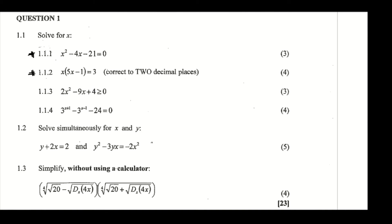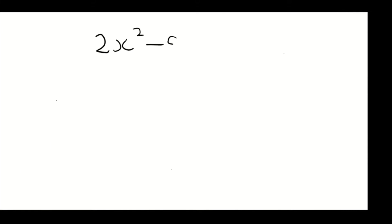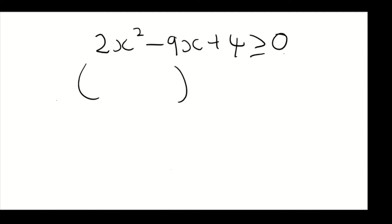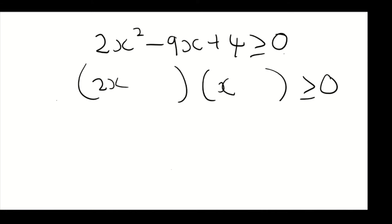Now we're going to solve 1.1.3. We have 2x squared minus 9x plus 4 is greater than or equal to zero. The first thing we're going to do is factorize. The factors of 2x squared are 2x and x. Factors of 4, such that when you add and subtract they give you the middle term, are 4 and 1. The signs are both negative.